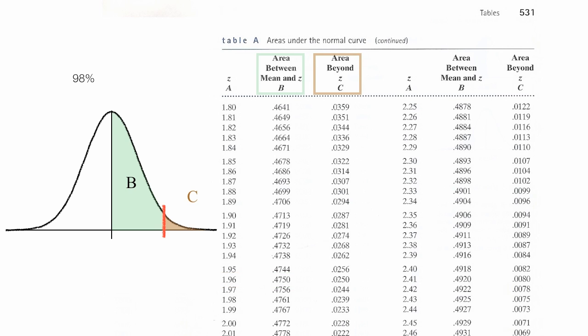So if I wanted to be 98% confident, I'd take 0.9800, divide it by 2, and look up that value in the body of the table. And that would be about right there. And so the Z score would be 2.33, and my critical value for 98% confidence would be 2.33.